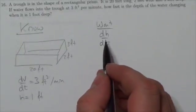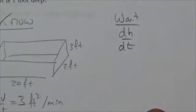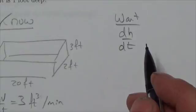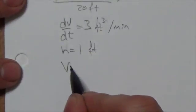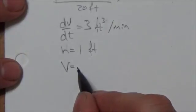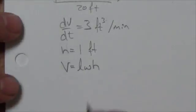So what we want here is dh/dt. This is the rate at which the height of the water changes with respect to time. That's what we want here. Now, one other thing that we know is the volume for a rectangular prism is going to be length times width times height.